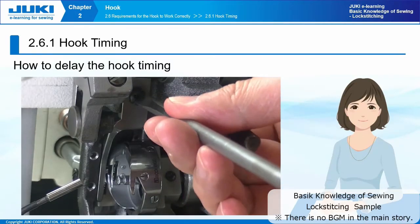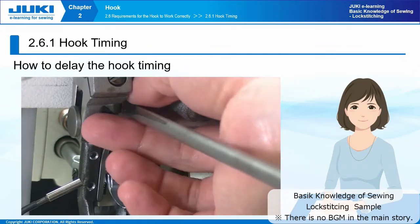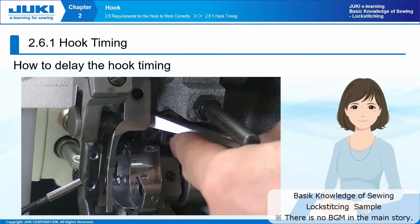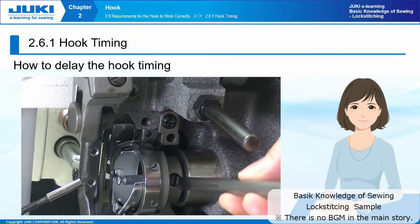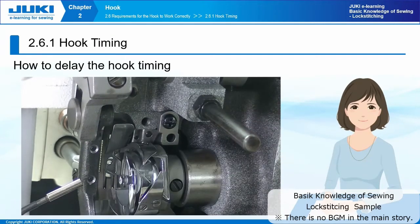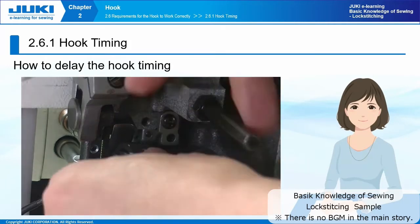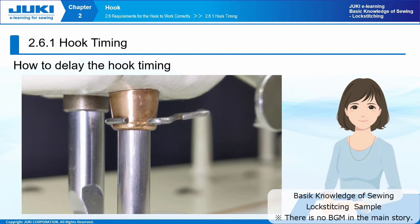To delay the hook timing, first remove the inner hook holder and loosen the screw on the hook. Align the needle and hook so that the tip of the hook becomes aligned with the center of the needle. Align the needle bar timing mark so that the bottom timing mark on the needle bar is higher than the bottom end of the needle bar metal lower under the machine housing. When delaying the hook timing,